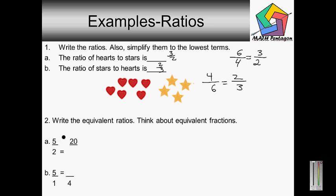Five goes into twenty four times — five times four is twenty, as you can see. So we basically multiply the same on the denominator side: two times four is eight. So we have twenty over eight. That would be the answer for that one right there.